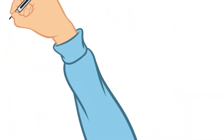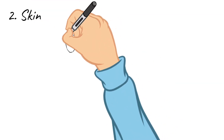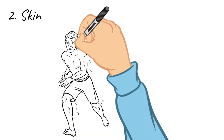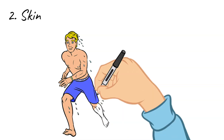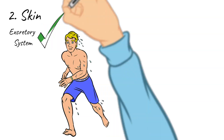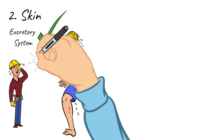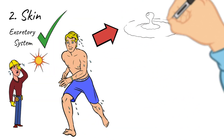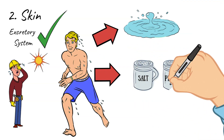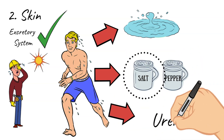Let's move on to the next part of the excretory system, and this is your skin. We talked about some functions of the skin in past videos, with sweating being one of those functions. But did you know that this makes your skin part of the excretory system as well? You sweat to cool your body down when you are overly hot, but the skin actually plays a major role in excreting extra water and salts as well as small amounts of urea through your sweat glands.